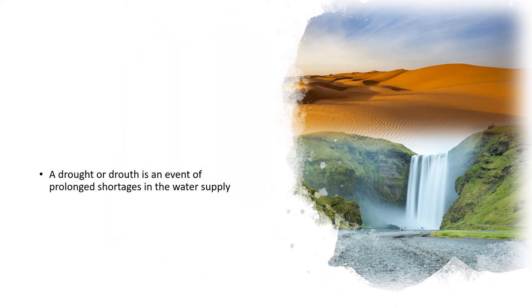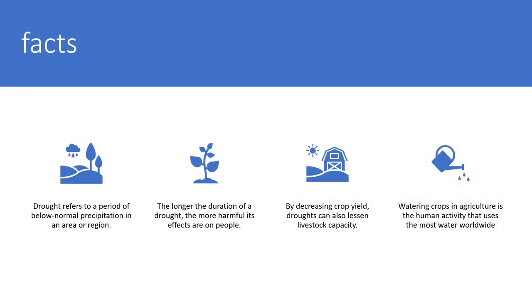A drought is an event of prolonged shortage in water supply. This is a picture of a place with no water, and this is a place with plenty of water and high precipitation rain.